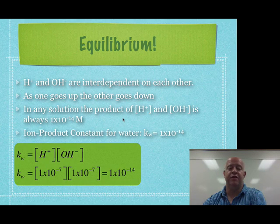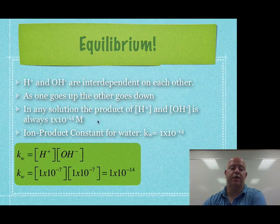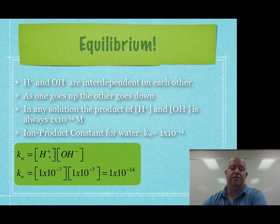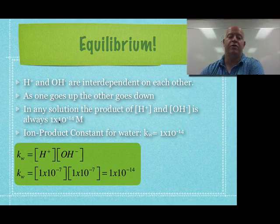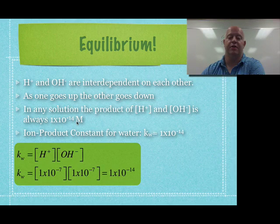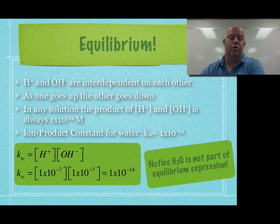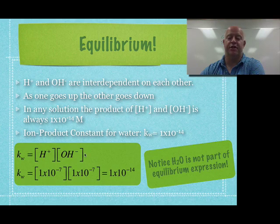Now, in any solution, if you multiply the two together, so if you take the hydrogen ions times the hydroxide ions, they will always equal 1 times 10 to the negative 14th. Now, notice, water is not part of our equilibrium expression down here.